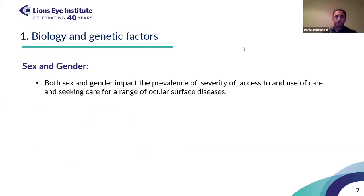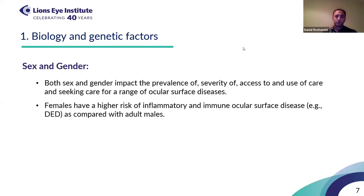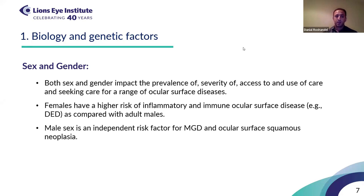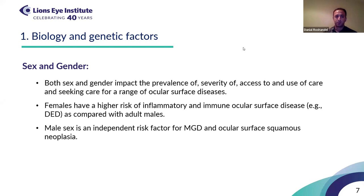The next biological factor is sex and gender. It's been shown that both sex and gender can impact prevalence, severity, and access to care, and also the seeking of care for a range of ocular surface diseases. In most studies, females have shown a higher risk of developing inflammatory and immune disorders of the ocular surface, like Sjögren's syndrome and even non-Sjögren's disease, compared with adult males. But male sex was an independent risk factor for meibomian gland dysfunction and ocular surface squamous neoplasia.